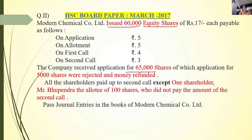Application received for 65,000 shares. So 60,000 were to be issued but 65,000 applications came — that means there is an oversubscription. So 5,000 must be refunded. The company, Modern Chemical Company Limited, issued 60,000 equity shares of rupees 17 each. These 17 rupees are distributed as: application 5, allotment 5, first call 4, and second call 3. Company received 65,000 applications but 5,000 shares were rejected and money refunded.